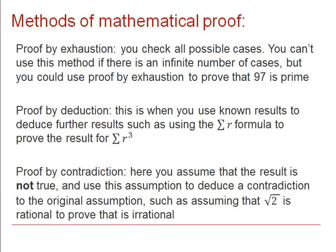Let's discuss different methods of mathematical proof that you may already have come across. There is proof by exhaustion, checking all possible cases. You can't use this method if you have an infinite number of cases, or an infinite number of numbers, but you could use proof by exhaustion to prove something like 97 is prime. Alternatively, you can do proof by deduction. This is when you use known results to deduce further results, for example, using the sum of r formula to prove the result for the sum of r cubed.